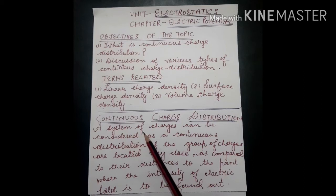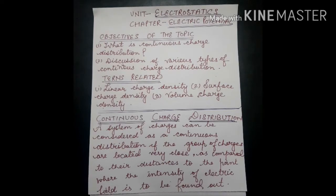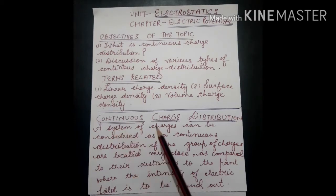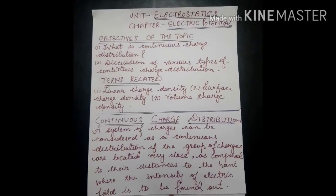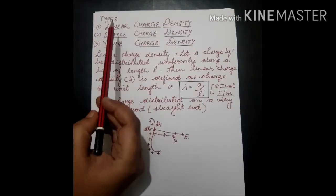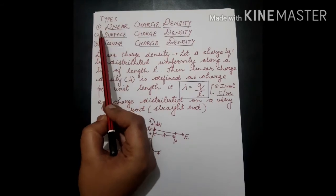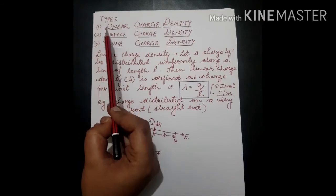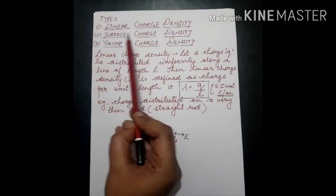When charges are very close, they cannot simply be added, so we use continuous charge distribution. The second condition is that the point where the electric field is to be found is very far away compared to the charges. When this condition holds, we also use continuous charge distribution. The three types are: linear charge density, surface charge density, and volume charge density.